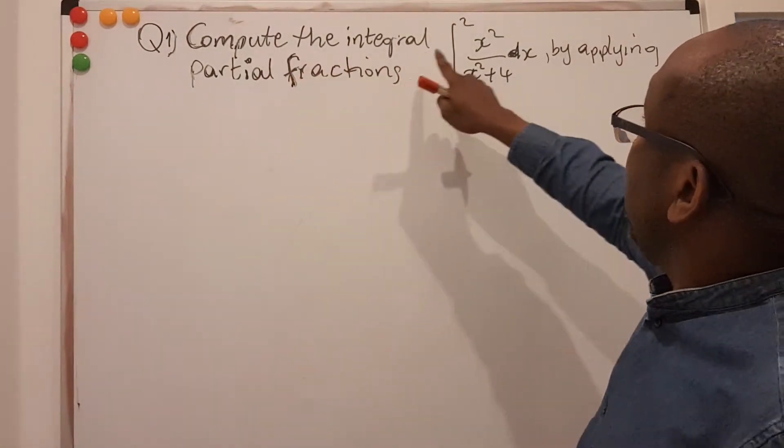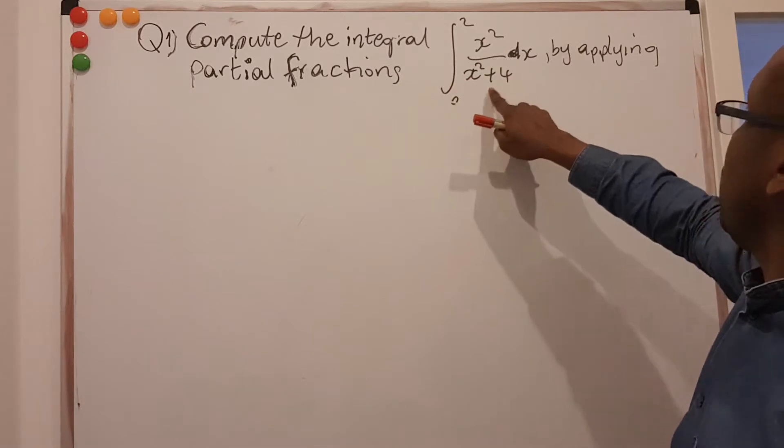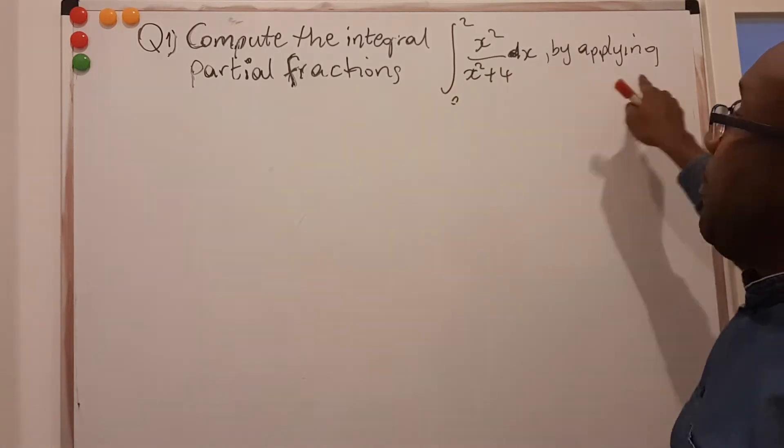So the question is compute the integral from 0 to 2, x squared divided by x squared plus 4 dx by applying partial fractions.